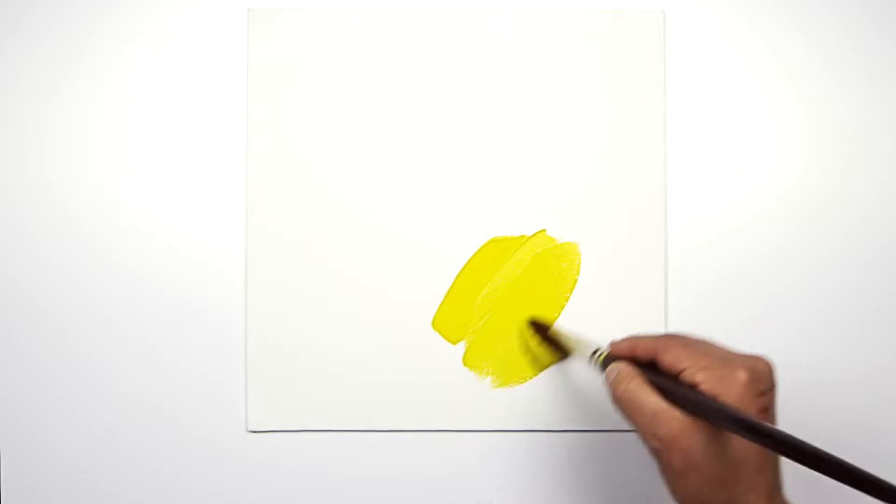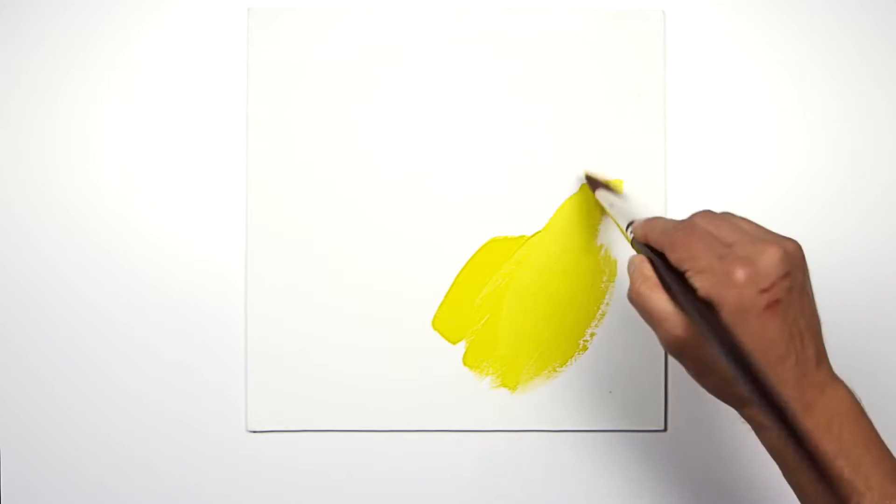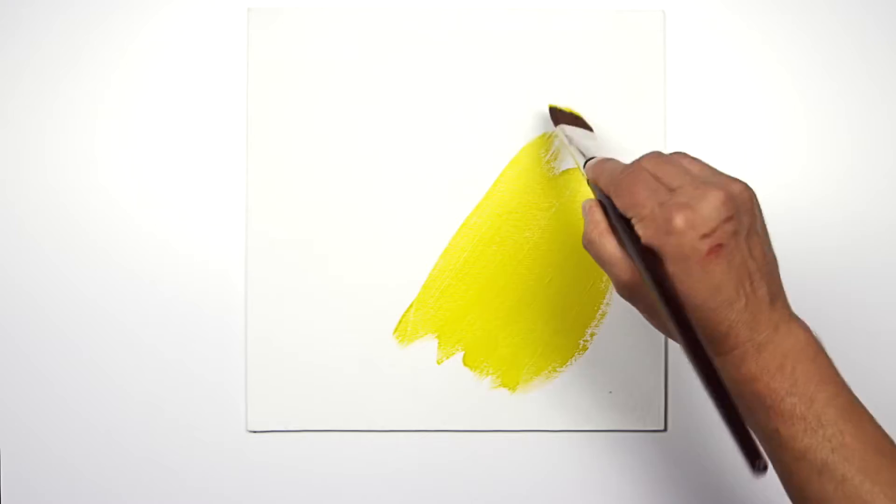Hard edge acrylic painting is a technique that began in the west coast of America in the late sixties. It's important to mix the paints to the right consistency, somewhere between single and double cream.